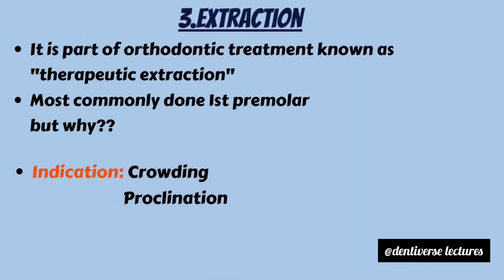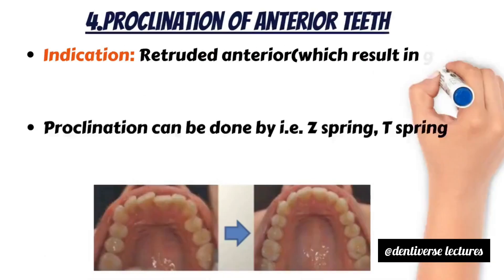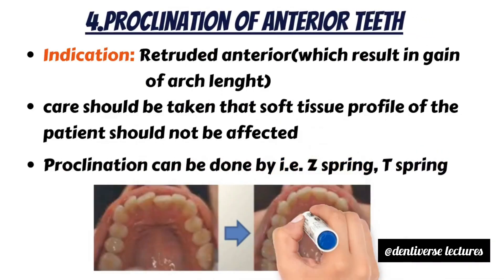Why is the first premolar extracted? Because space gained after extraction can be utilized for both anterior and posterior teeth. Indications for extraction are crowding and proclination. The fourth method is proclination of anteriors, which causes an increase in arch length.